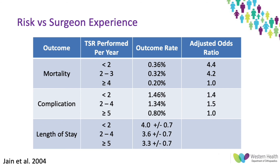This data from 1988 to 2000 covers all total shoulder arthroplasties — including anatomic and reverse — comprising nearly 12,600 procedures. For surgeons performing fewer than two total shoulders per year, the risk of complications was approximately 1.46%. For surgeons performing more than five per year, the risk is significantly reduced to 0.8% — almost a 1.5 times increased risk with an inexperienced surgeon. Mortality also increases by nearly 4.4 times and length of stay is longer for inexperienced surgeons.